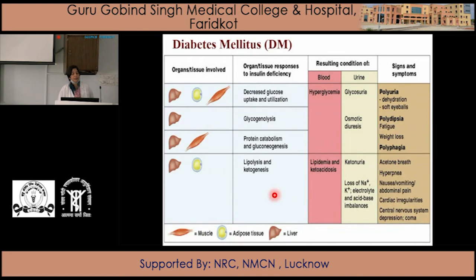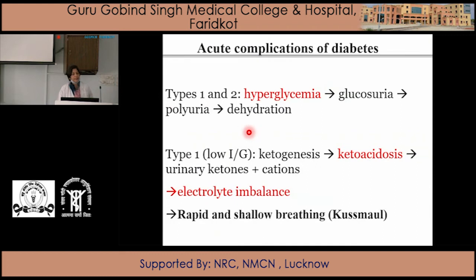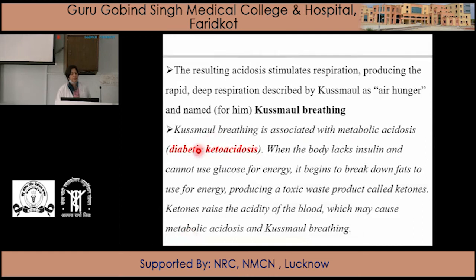In the diabetic patient, the three main target tissues affected are the liver, adipose tissue, and skeletal muscle, leading to hyperglycemia, hyperlipidemia, and ketoacidosis. The three cardinal signs are polyuria, polydipsia, and polyphagia, with acetone breath especially present in Type 1 diabetes mellitus along with rapid deep breathing. Acute complications include hyperglycemia, glycosuria, polyuria, and cellular dehydration. The decreased insulin-to-glucagon ratio in Type 1 leads to ketogenesis, ketoacidosis, ketone bodies in the urine, electrolyte imbalance, and Kussmaul's breathing due to diabetic ketoacidosis.